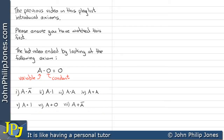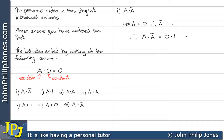Let's have a look at the first example: A AND NOT A. Now let us make A equal to zero. Therefore NOT A is the opposite, which must be one. Therefore A AND NOT A is zero AND one, which gives us a zero.